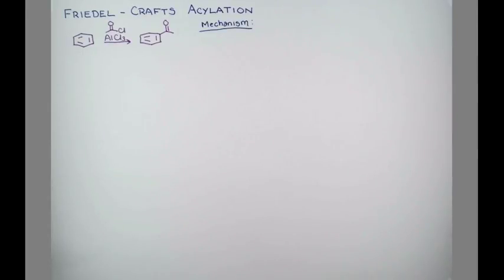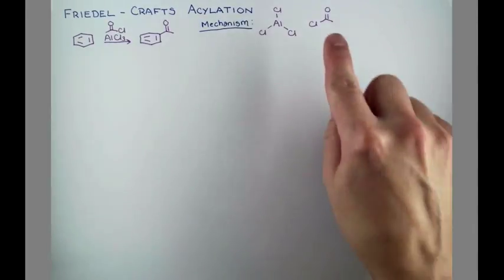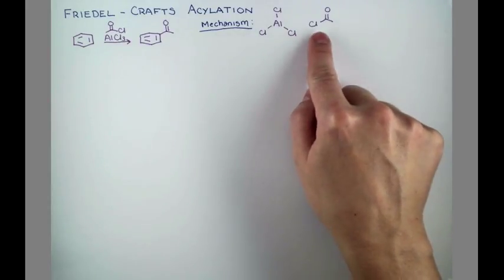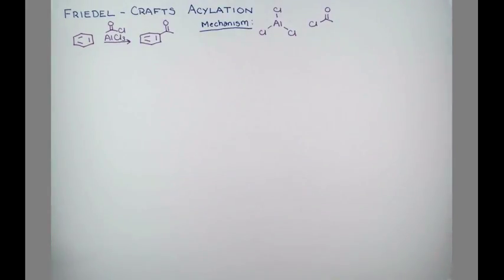Let's look at the mechanism of this reaction. In the first step, the acid chloride is going to react with aluminum trichloride. The chlorine will be transferred onto aluminum in a process similar to Friedel-Crafts alkylation.